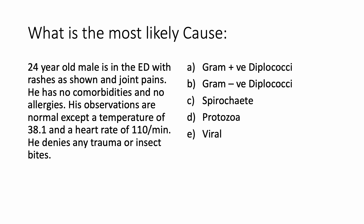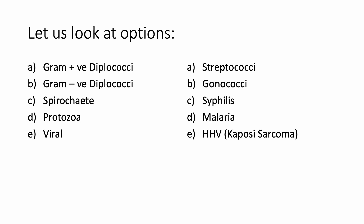Let us look at the options closely. Gram-positive diplococci — that is streptococci — which could give rise to impetigo. Impetigo happens on the face and it's quite contagious; it can also happen on the scalp and other parts of the skin, but this doesn't seem like impetigo. Gram-negative diplococci is gonococci, and gonococci can give rise to such a rash.